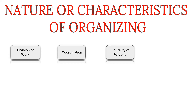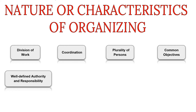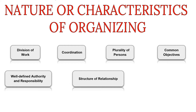The next characteristic is plurality of persons. Organization is a group of many persons who assemble to fulfill a common purpose — a single individual cannot create an organization. Next is common objectives: there are various parts of an organization with different functions to perform, but all move in the direction of achieving a general objective. Next is well-defined authority and responsibility: a chain is established between different posts from the top to the bottom, clearly specifying the authority and responsibility of every post. Next is structure of relationship: the relationship between persons working on different posts is decided — who will be the superior and who will be the subordinate.